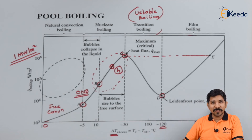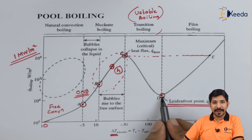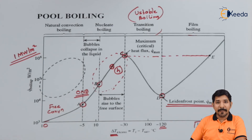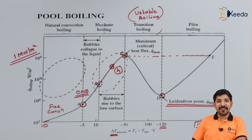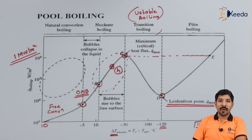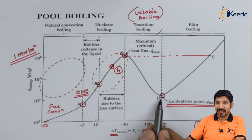Now let us talk about the Leidenfrost point. The Leidenfrost point is the point where the bubbles start dancing. You might have seen a dosa maker sprinkle a small amount of water to check the surface temperature of the tawa. After sprinkling, those water droplets will start dancing over the surface and then immediately vaporize. Even though the ΔT is quite high, the phase change from liquid to vapor is not sudden — the droplet initially dances on the surface and later gets evaporated. This point is called the Leidenfrost point, where the heat transfer is at a minimum for the highest ΔT in that region.